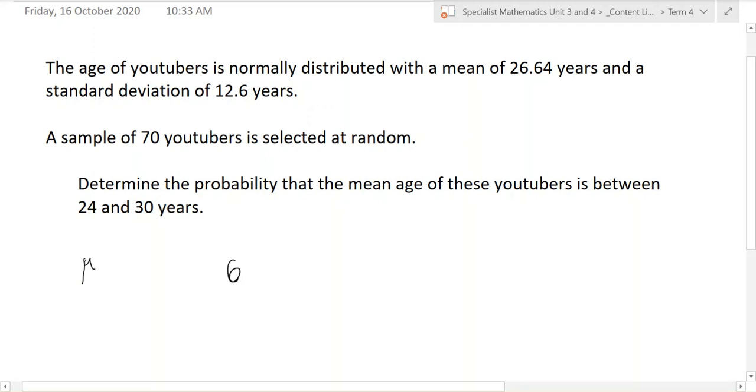That's for the population. So this is, it's like a U with a tail at the front. Population mean. In this question, the population mean is 26.64 years.